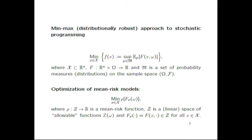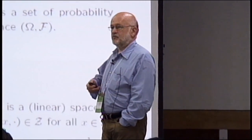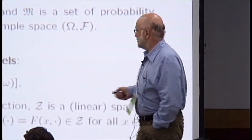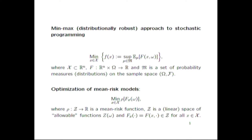One idea is that we don't have just one distribution, but a whole family of distributions — more than one. How to construct this family is also a good question, but we look at the worst possible case. When we talk about minimization problems, we say the nature is working against us. From the whole family of possible distributions, it will choose the worst possible one. We take the maximum of that and then minimize with respect to decision parameters. This approach has a very long history — going back at least 50 years.